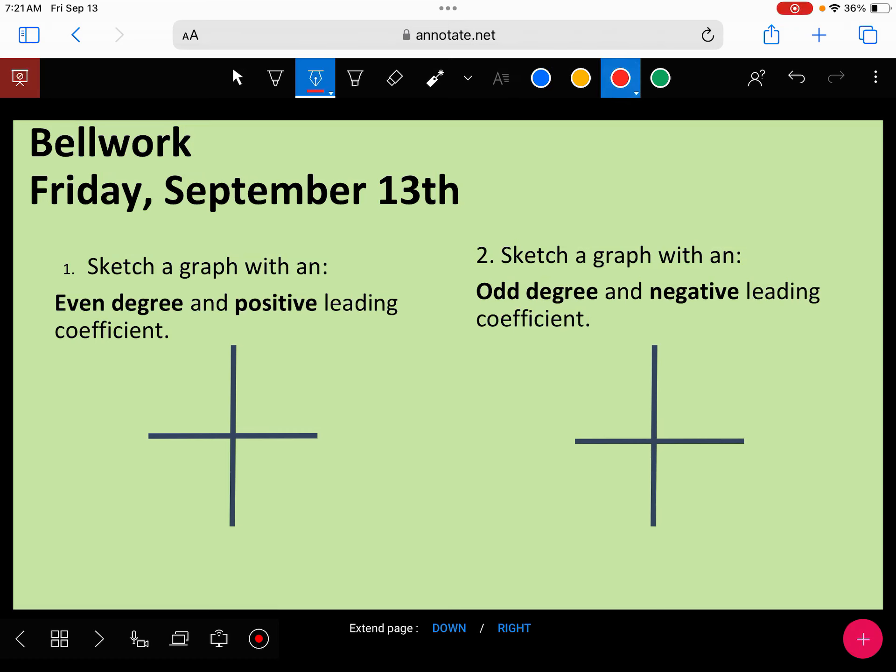So we know that if it's an even degree, that means we're looking for arrows that go the same direction. Both sides are going to go the same. And if it's positive, that means that they will both go up.